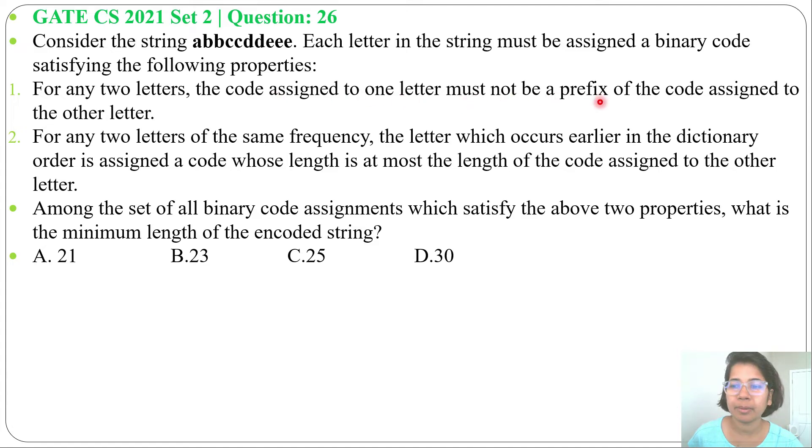So it's asking about prefix code as discussed in Huffman code. Second property: for any two letters of the same frequency, the letter which occurred earlier in the dictionary order is assigned a code whose length is at most the length of the code assigned to the other letter. If two letters have the same frequency, the letter which comes first in dictionary order will be latter, and the letter which comes late in dictionary order will come first.